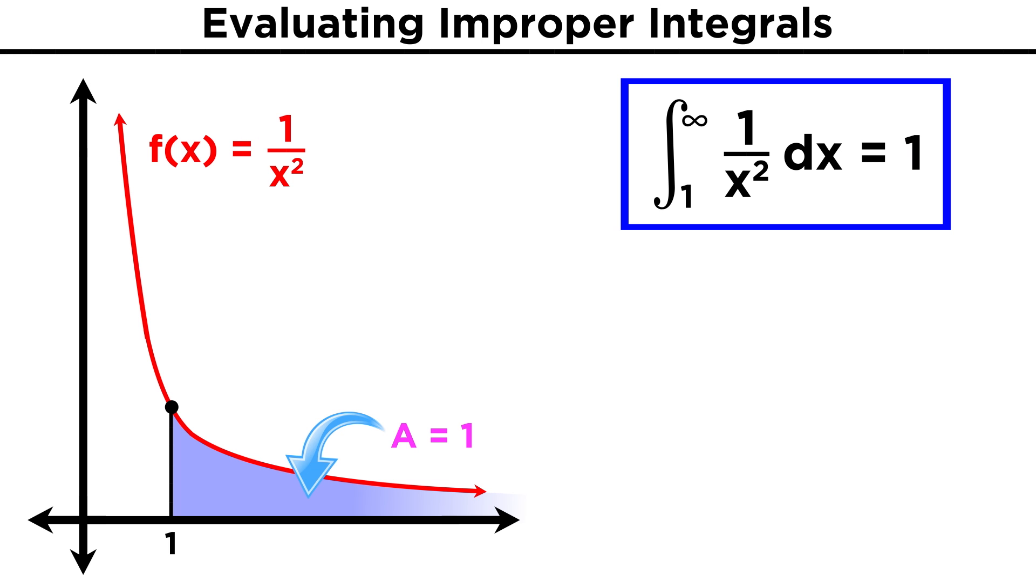That means, quite incredibly, that the area under the curve from x equals one all the way to infinity is one.